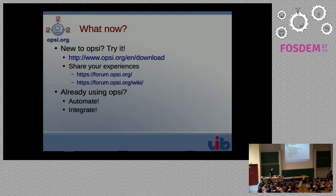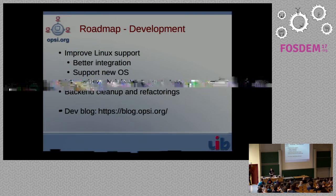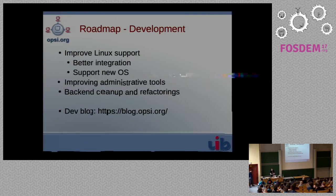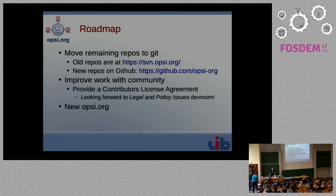With that said, I want to give a small roadmap of what we are up to. We want to improve Linux support even further, improve the administration tools, and do some cleanup and refactoring. My personal roadmap is to move more things to Git — we started as a company using SVN and I want to migrate to Git — and to improve community contribution by maybe providing a contributor license agreement.